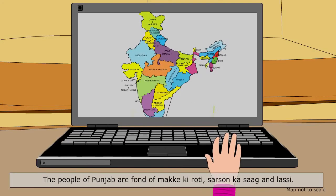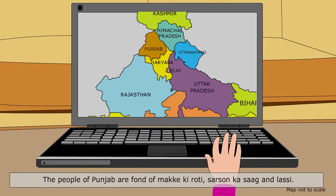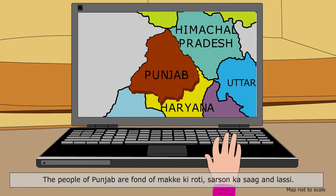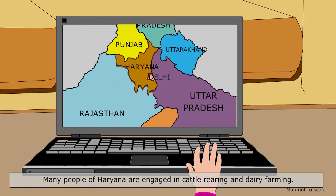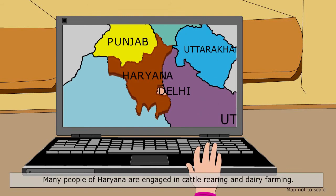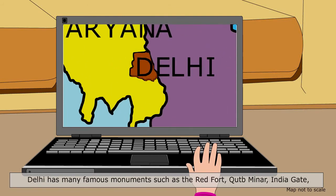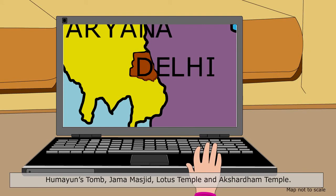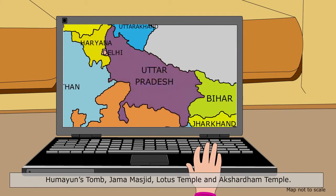The people of Punjab are fond of Makki ki Roti, Sarson ka Saag and Lassi. Many people of Haryana are engaged in cattle rearing and dairy farming. Delhi has many famous monuments such as the Red Fort, Qutub Minar, India Gate, Humayun's Tomb, Jama Masjid, Lotus Temple and Akshardham Temple.